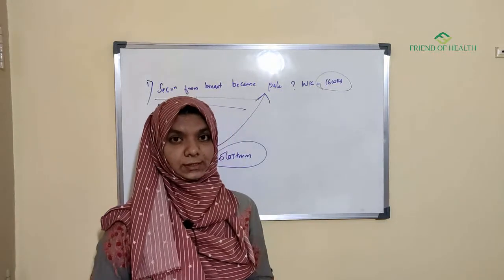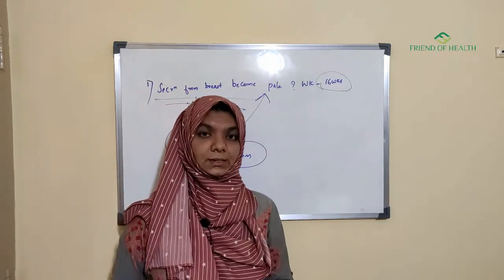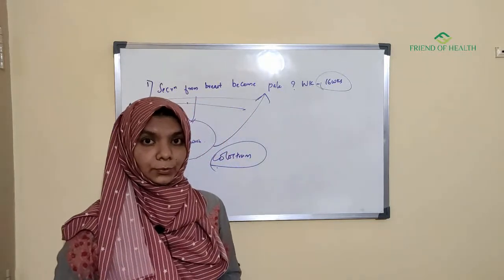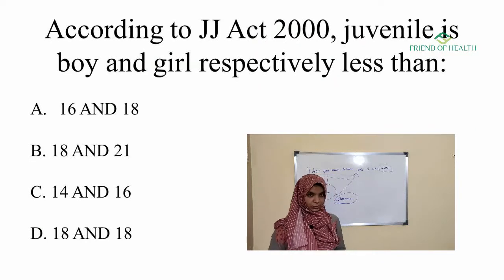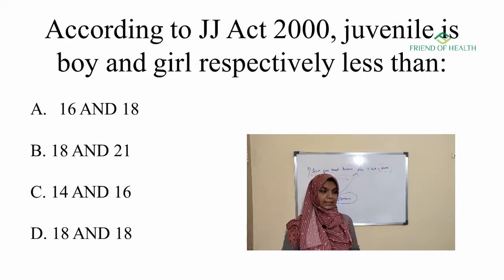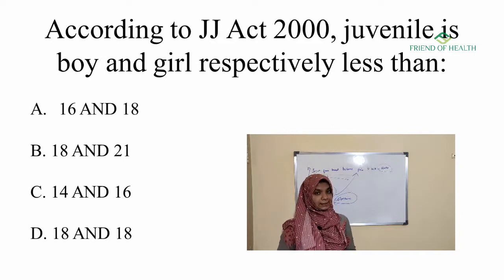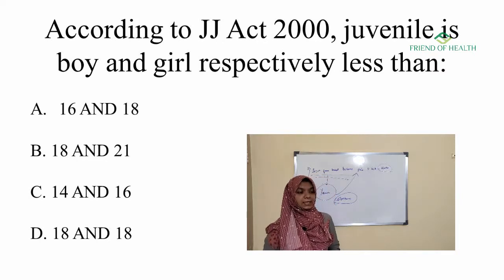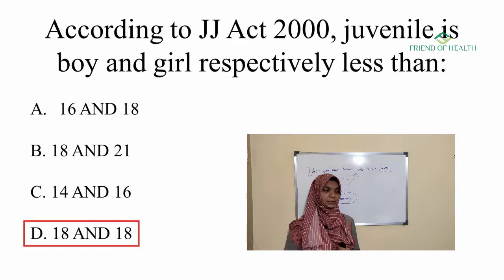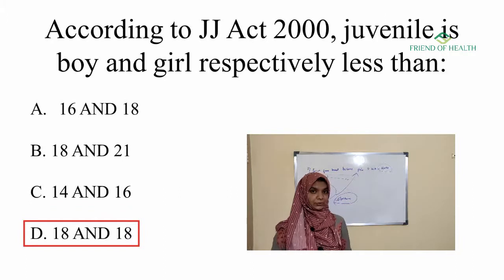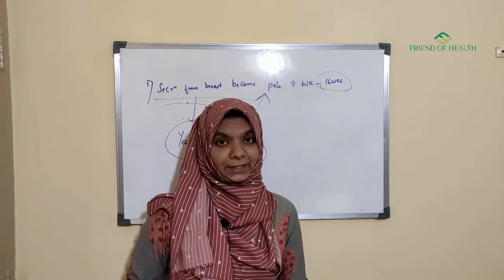A question from forensic medicine: according to the Juvenile Justice Act 2000, a juvenile is a boy and girl respectively less than — options: A: 16 and 18, B: 18 and 21, C: 14 and 16, D: 18 and 18. The answer is 18 and 18. Make a note of this.